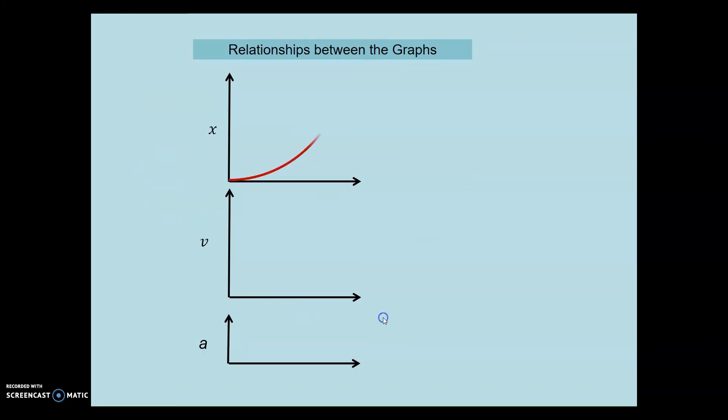Relationships between the graphs. This shape, the displacement versus time graph, was a parabola. The velocity versus time graph, a straight line. And acceleration versus time was a flat line.